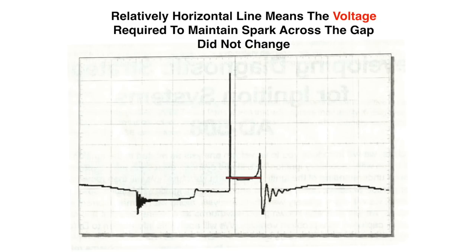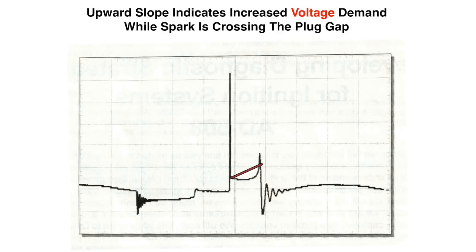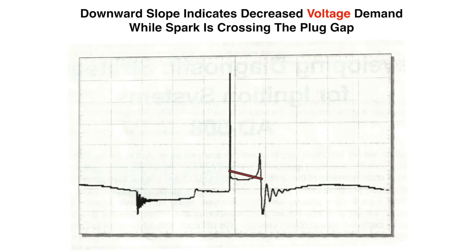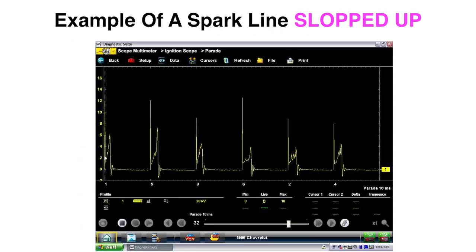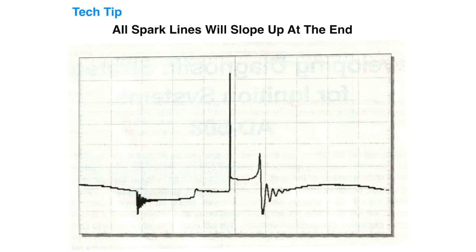The slope of this line represents increasing or decreasing voltage required to maintain the spark across the gap. A relatively horizontal line means the voltage required did not change — no significant changes to conditions inside the chamber. An upward slope indicates increased voltage demand while the spark is crossing the spark plug gap — increased resistance inside the chamber. A downward slope indicates decreased voltage demand, which is decreased resistance in the combustion chamber. Here's an example of a spark line that is sloped up on all cylinders.